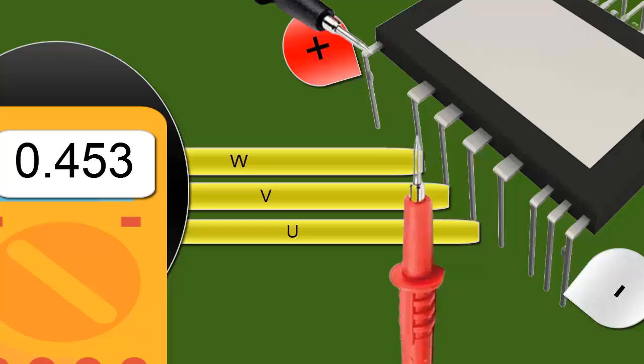The measurement obtained between the negative supply and each pin UVW should yield practically the same reading.